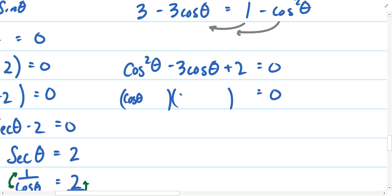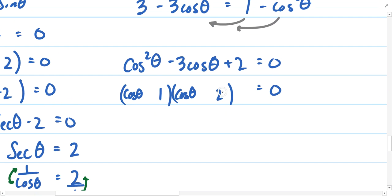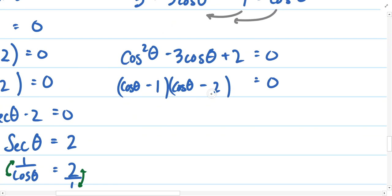I'm going to write cosine theta, cosine theta here, because I know cosine times cosine is cosine squared. And I also know that 2 times 1 is equal to 2. And if I had a negative 2 and a negative 1, then during the foiling process, this negative 2 cosine minus 1 cosine combines to make negative 3 cosine. And we have two factors that multiply to equal 0. So I can set each factor equal to 0.